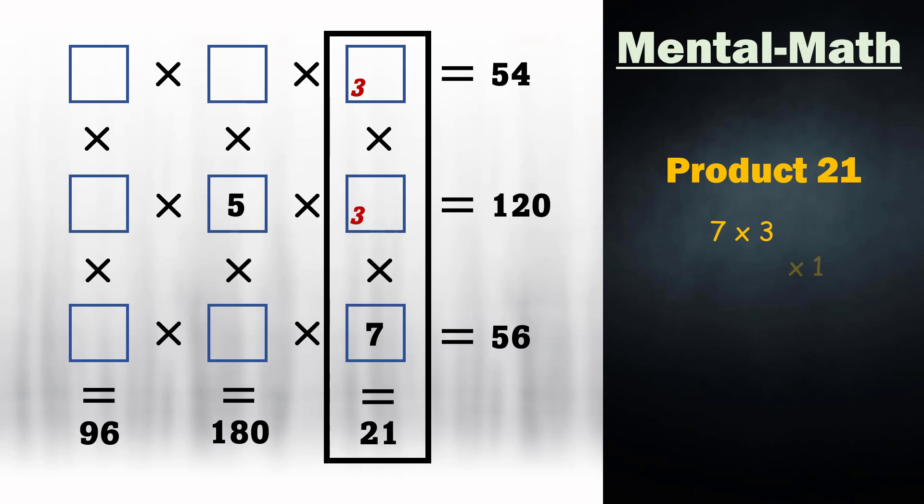So that 7 times 3 times 1 would give 21. That's why 3 and 1 are the candidates of these two squares.